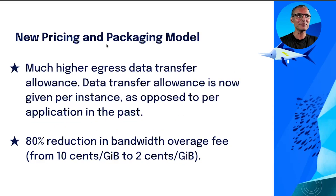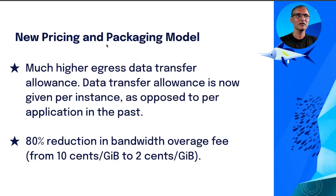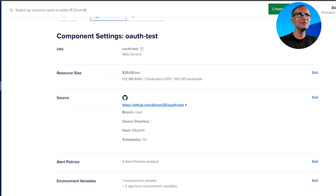On the network front, earlier you had very limited data allowance. Now we are making the data allowance per instance, meaning the more you use, the higher the data allowance you get. For bandwidth overage, we are reducing the fee from 10 cents per gigabyte to only 2 cents per gigabyte. Let me show you with a simple example.